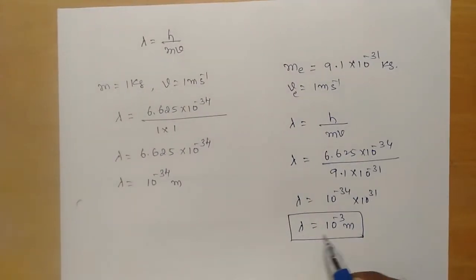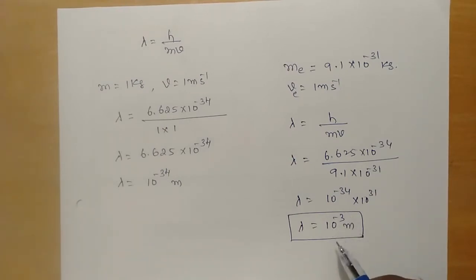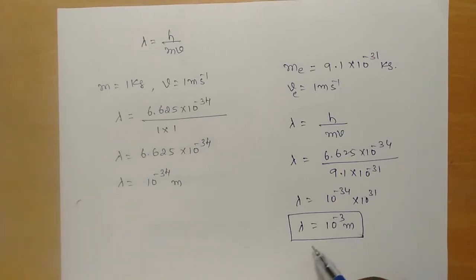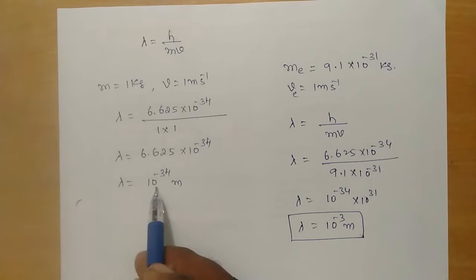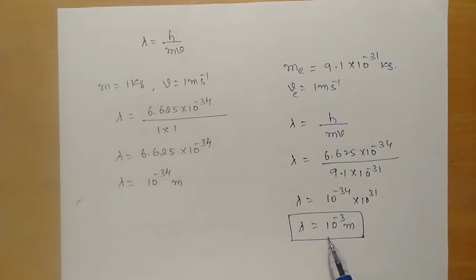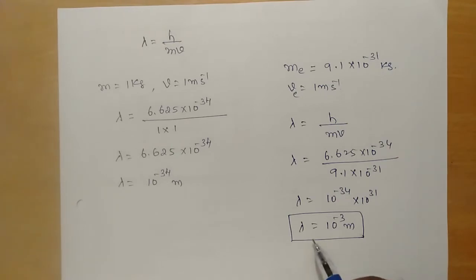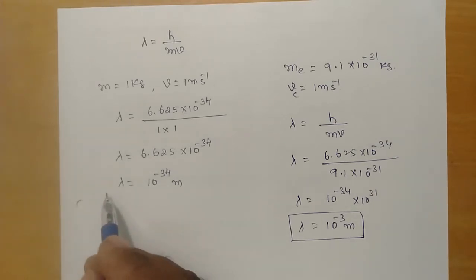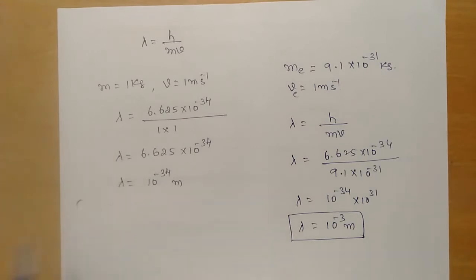Lambda of the order of 10^-3 means it is convenient to measure this wavelength compared to macro objects. For micro objects — atomic and subatomic particles — we can easily measure the order of the de Broglie wavelength.